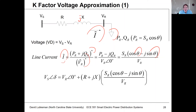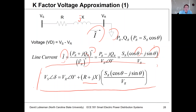For a voltage drop calculation, the sending end voltage is the receiving end voltage plus the drop across the line. The drop across the line is the line impedance times the current. This is an exact expression so far for the voltage drop. The problem with this calculation is that it's a nonlinear calculation, so we need to find a way of linearizing this.